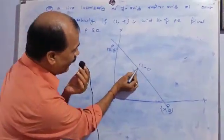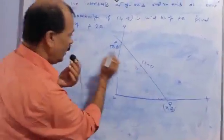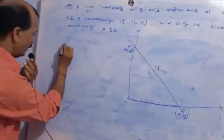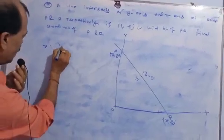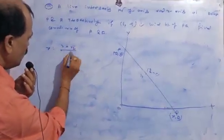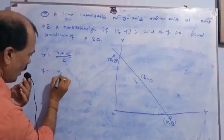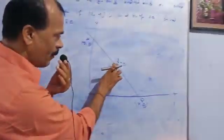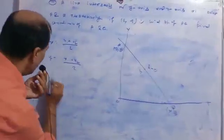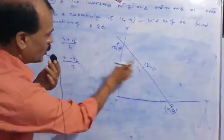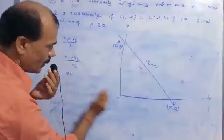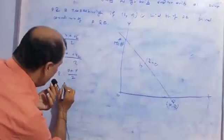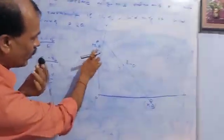Since M is the midpoint of PQ, the midpoint formula gives x equal to x1 plus x2 divided by 2. The abscissa is 2, so we write 2 equals 0 plus x2 divided by 2. Therefore x equals 4.